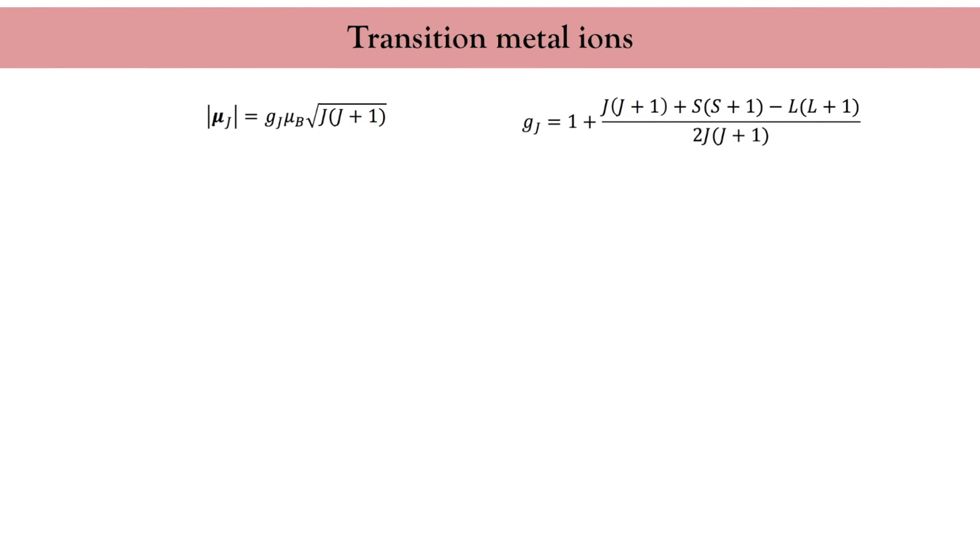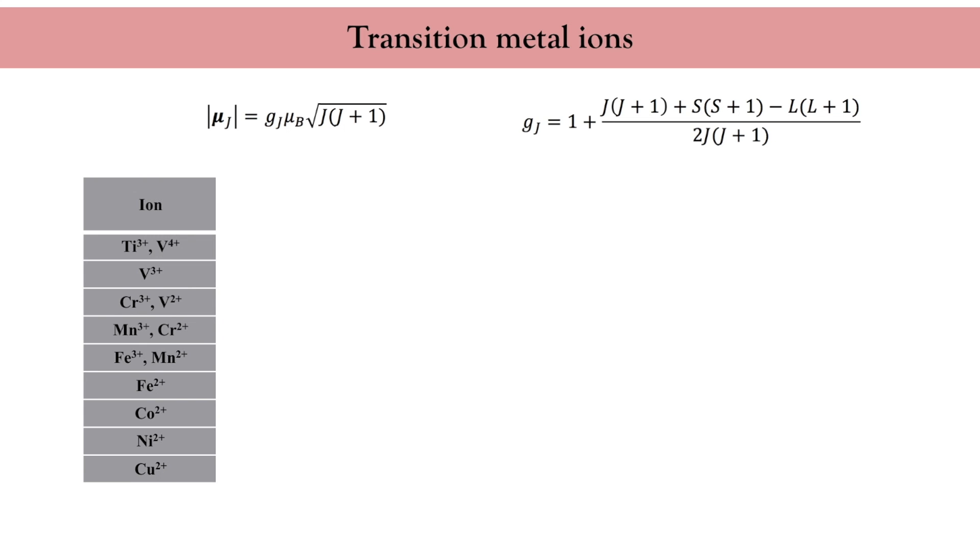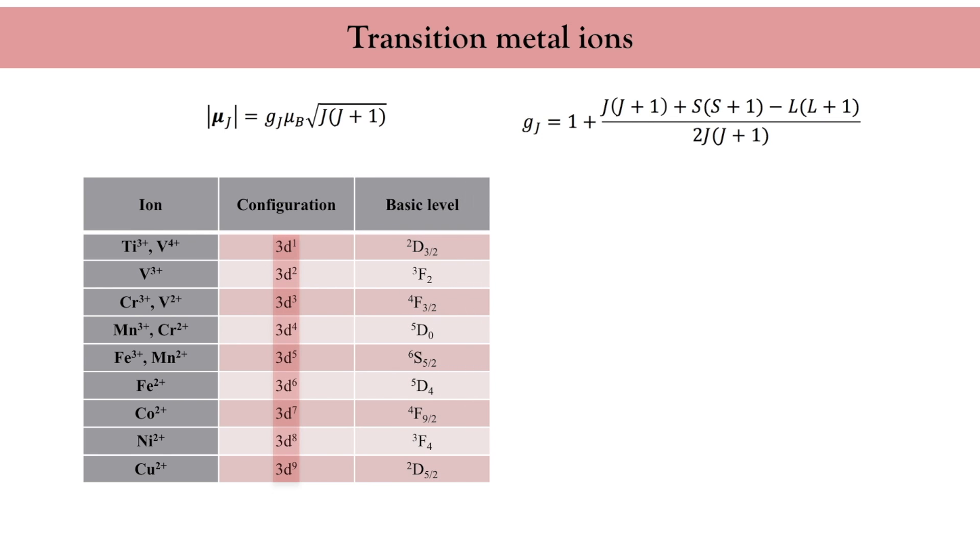Now we move to a different case, the 3d transition metal ions. Their electronic configuration is based on the argon configuration and the additional electrons occupy the 3d shell. Again, we can determine the spectroscopic terms using Hund's rule and we can also compute their magnetic moments using their total angular momentum j.